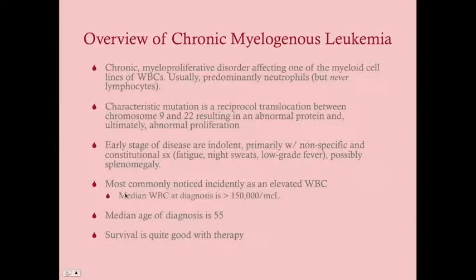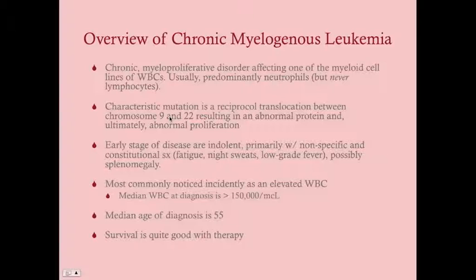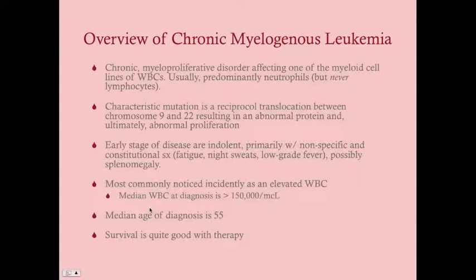CML and chronic leukemia in general is more a disease of older adults and the elderly. The median age of diagnosis is 55, and children do not get chronic leukemia. Survival with CML is actually quite good with therapy, particularly because in the last 15 years we've learned how to treat this specific mutation — the chromosome 9-22 translocation — and survival has improved significantly.